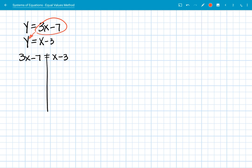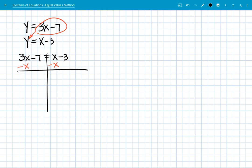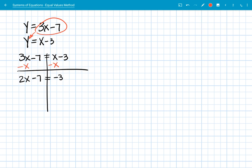So let's subtract this x over. And that's going to give me the simplified equation that 2x minus 7 equals negative 3. So let's add 7 over to get the x's by themselves. 2x equals 4.